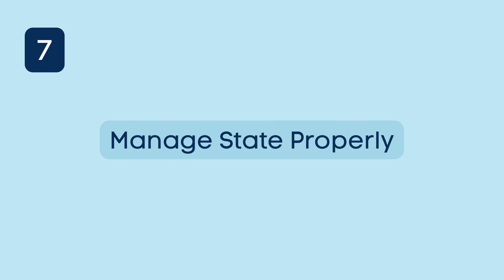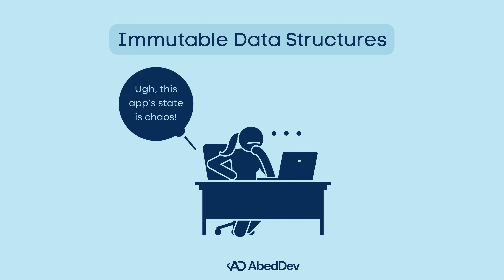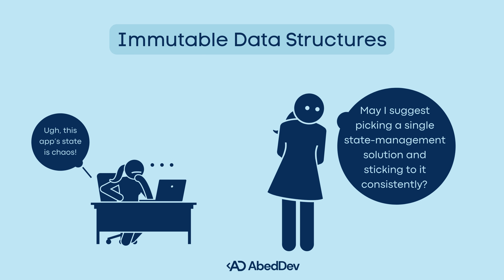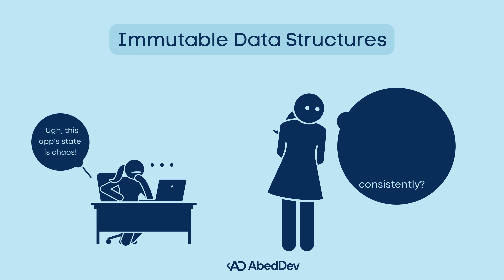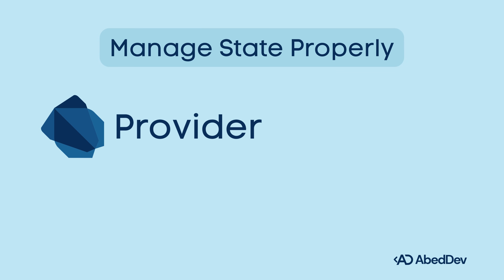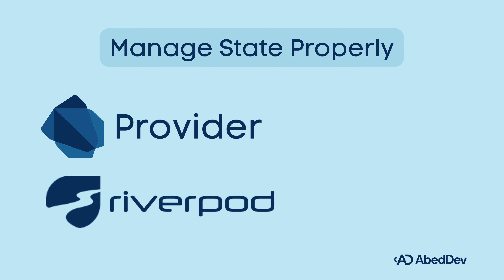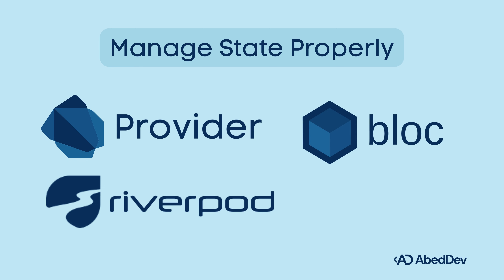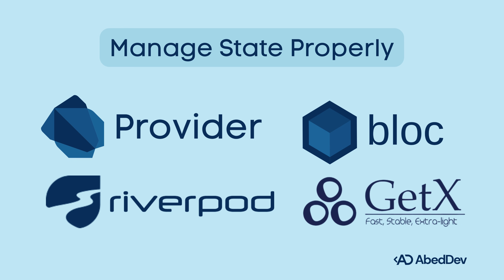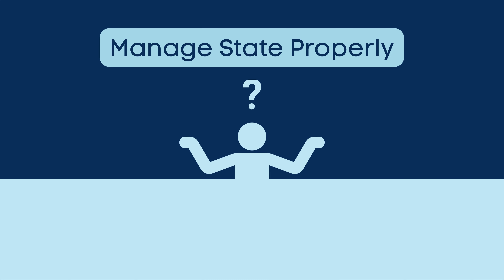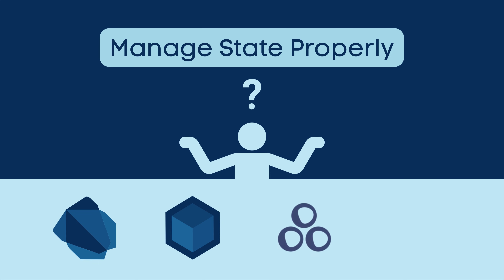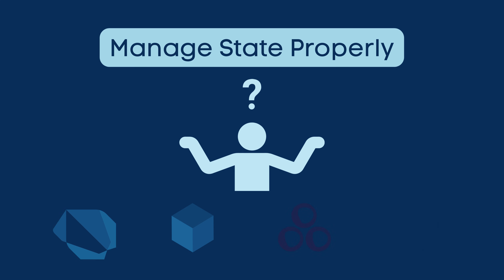Manage state properly. Flutter apps get complex fast. Pick a state management solution and stick with it consistently. Options include: Provider for simple apps, Riverpod for type-safe and scalable, Bloc and Cubit for enterprise level, and GetX for minimal boilerplate. Pro tip: don't mix multiple state management solutions unless there is a clear architectural reason.